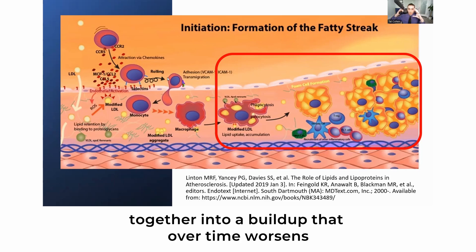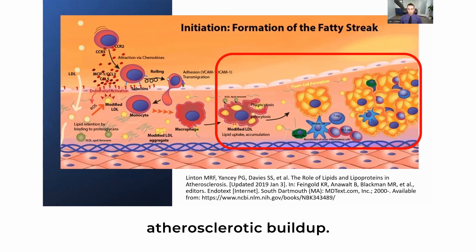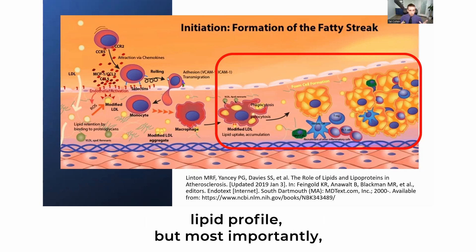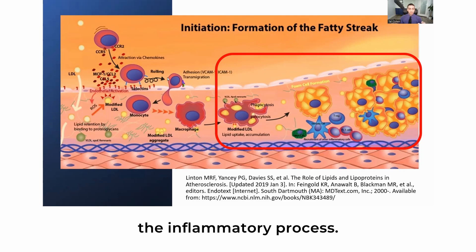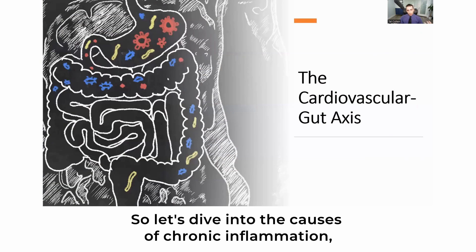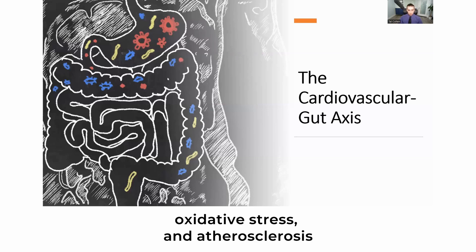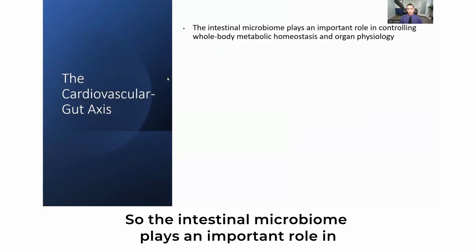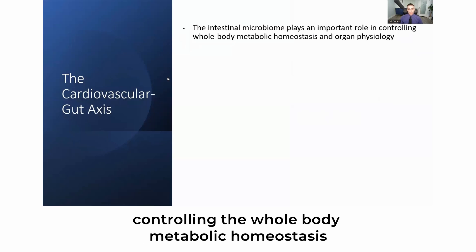You can see on the right side the accumulation of macrophages, foam cells, and immune cells building up over time, worsening the atherosclerotic buildup. This is why it's so important to address not just the lipid profile but, most importantly, the inflammatory process. So let's dive into the causes of chronic inflammation, oxidative stress, and atherosclerosis or vascular injury.